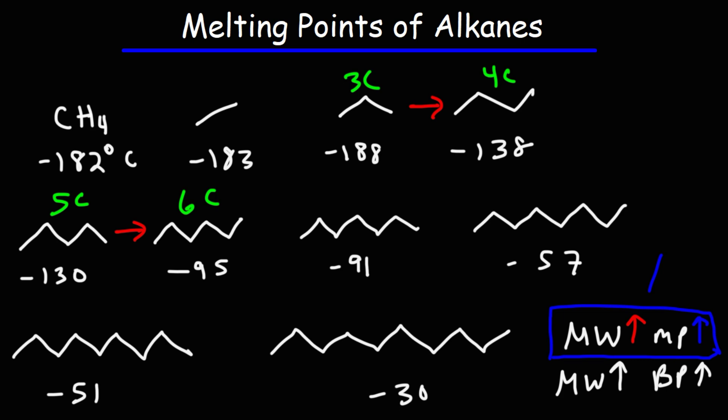And that trend repeats. As we move from an odd number of carbon atoms to an even number of carbon atoms, there is a huge increase in the melting point. Going from even to odd, the increase in melting point is small. Here, the increase is only four degrees Celsius.